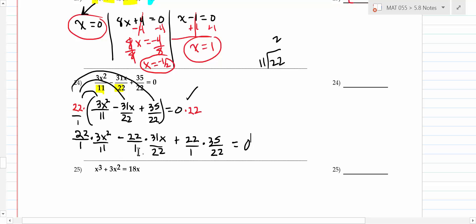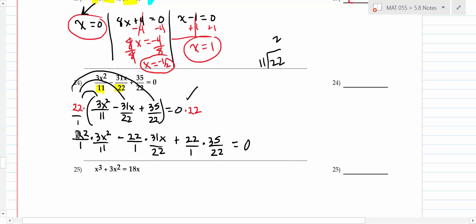Now factor the trinomial x² + 3x - 18: first term x·x, last term 18. Use 6 and 3: 6 × 3 = 18, and +6 - 3 = 3. So x(x + 6)(x - 3) = 0. Set each factor equal to zero: x = 0, x + 6 = 0 gives x = -6, x - 3 = 0 gives x = 3. Three answers: {-6, 0, 3}. If the highest power is 3, you're guaranteed three answers.